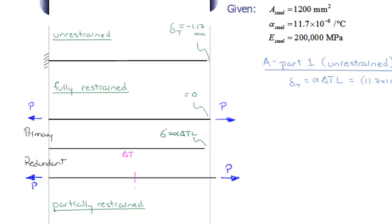If we use our method of sections, we'll know that our internal force throughout the rod is P in tension. And that will cause a displacement at the end. And we'll call that delta double prime, equal to PL over EA.